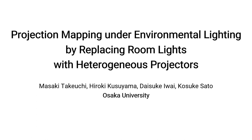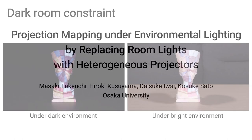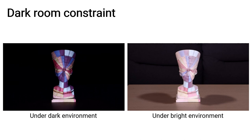We introduce new projection mapping techniques under environmental lighting by replacing room lights with heterogeneous projectors. Typical environment lighting globally elevates the scene brightness. Therefore, if projection mapping is performed under it, the dark areas of a projected result inevitably get brighter, which causes significant contrast degradation in the projected result.